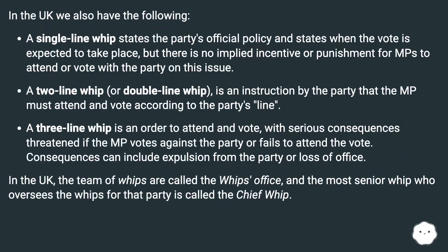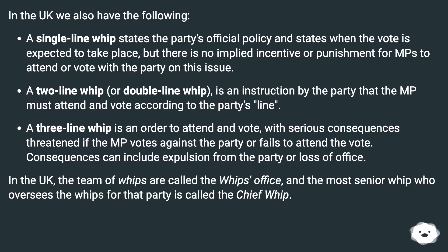In the UK, we also have the following. A single-line whip states the party's official policy and states when the vote is expected to take place, but there is no implied incentive or punishment for MPs to attend or vote with the party on this issue. A two-line whip, or double-line whip, is an instruction by the party that the MP must attend and vote according to the party's line.